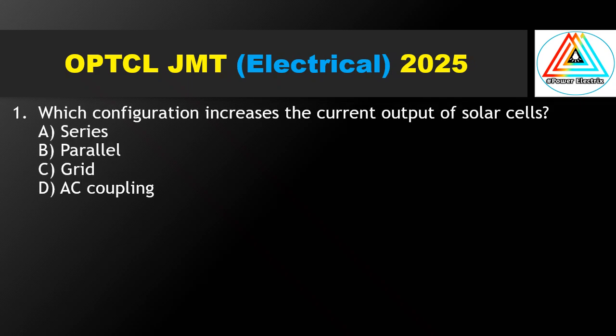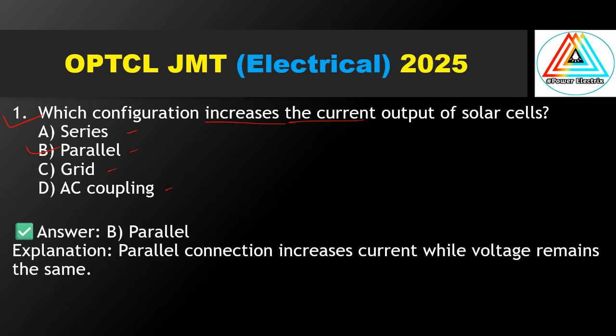Question No. 1: Which connection increases the current output of solar cells — series, parallel, grid, or SA coupling? To increase the current, the connection should be parallel. Parallel connection increases current while voltage remains the same.